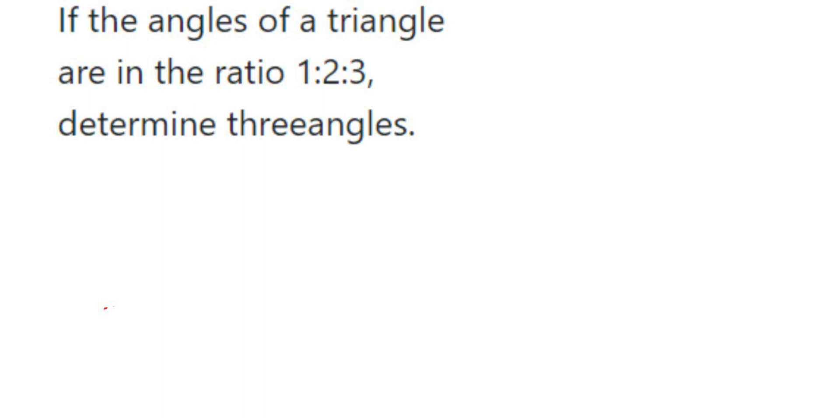Hello everyone, here's a question on triangles. If the angles of a triangle are in the ratio 1:2:3, determine the three angles. So they have given the three angles which are in the ratio 1:2:3, and we have to find out the angles.